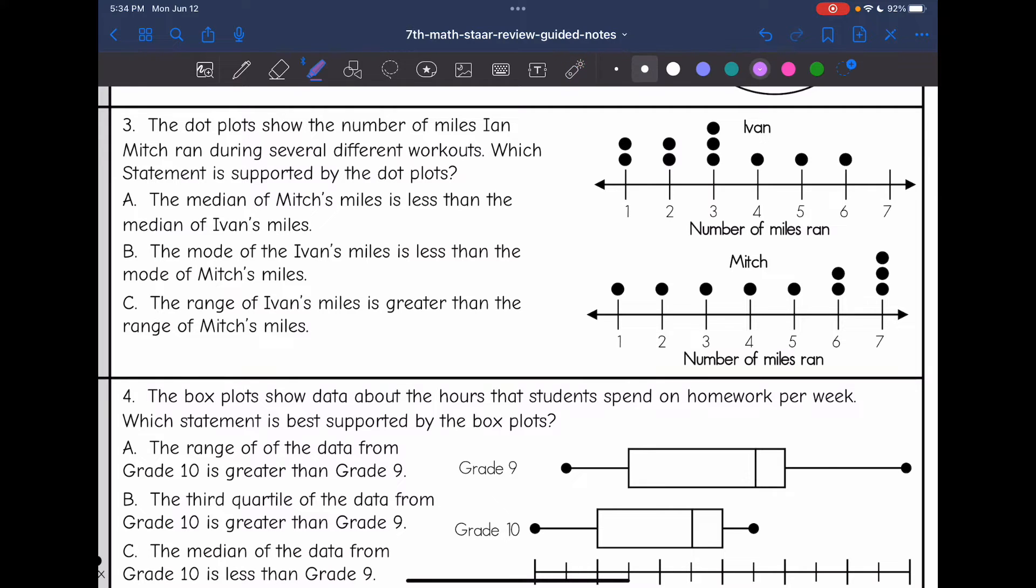So A says the median of Mitch's miles is less than the median of Ivan's miles. So let's go ahead and find the median of both of these dot plots. So dot plots are nice because the data is already in order displayed for you. So it's pretty easy to find the median. You just keep crossing off one from either side until you get to the middle. The middle would be between those two, which is three. So the median here is three. Now let's find the median of Mitch's. And it looks like the median is going to be between five and six. So the median would be 5.5.